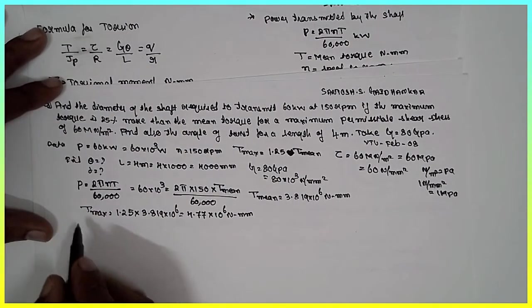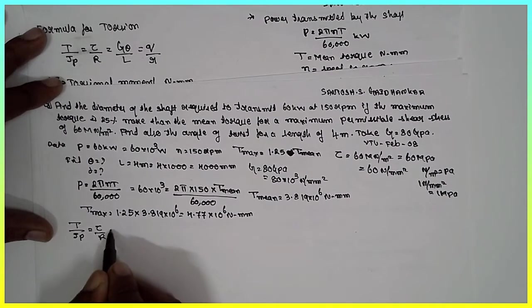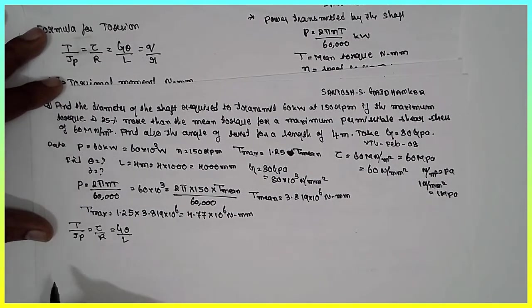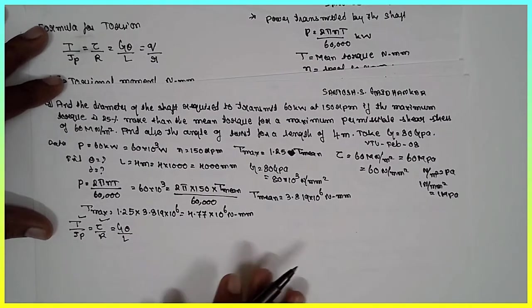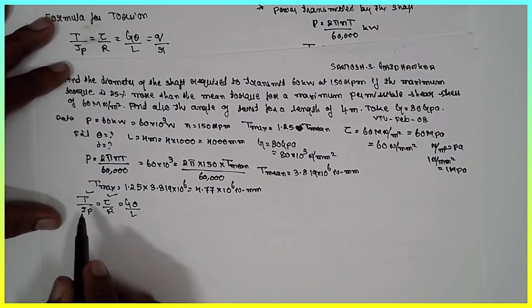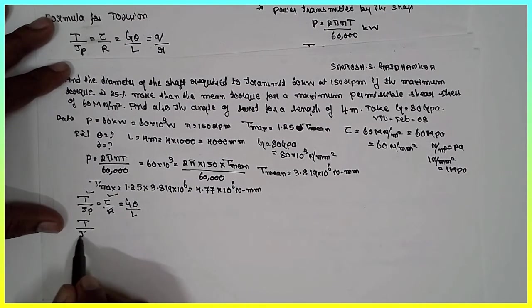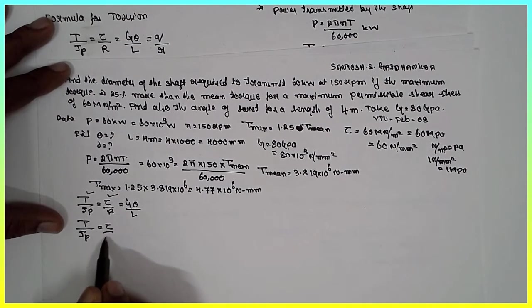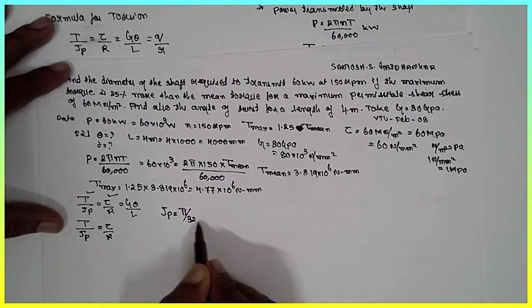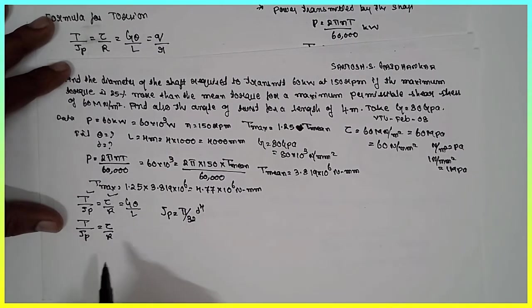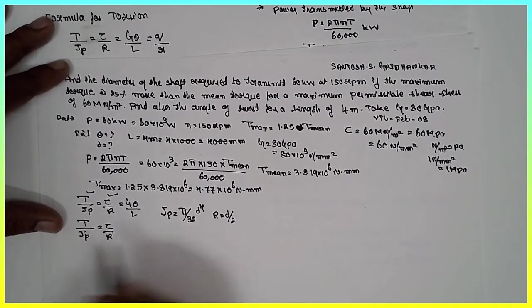Now, I will use this formula: T divided by Jp equals tau divided by R equals G theta divided by L. I will use these two combinations in order to find out the diameter. T over Jp equals tau divided by R, where Jp is nothing but for solid shaft pi by 32 d raised to 4. Where R is nothing but d by 2 for the solid shaft. It is a solid shaft.